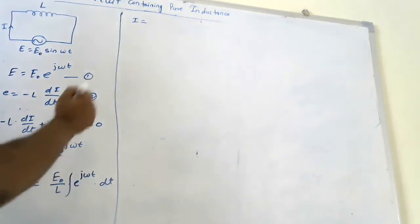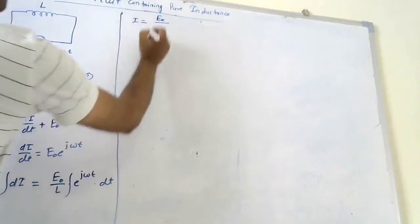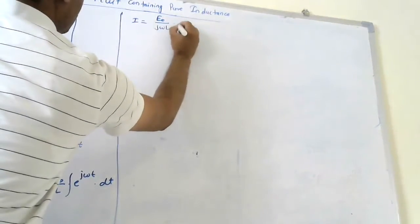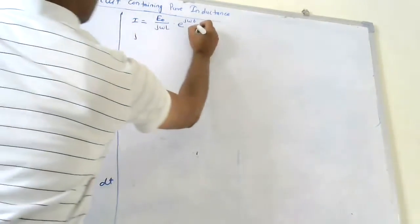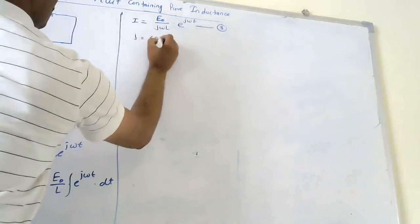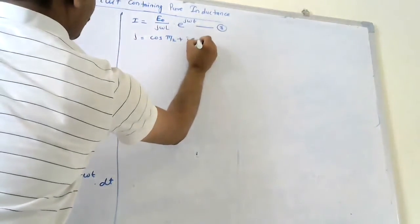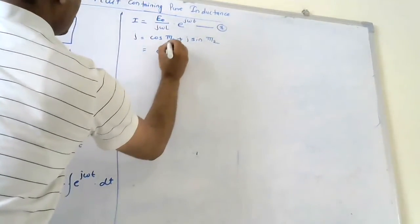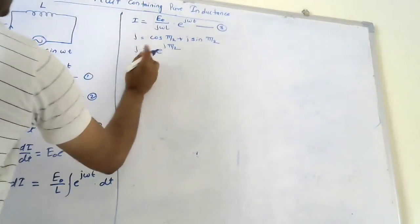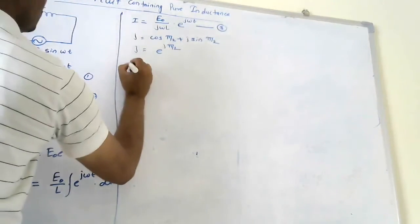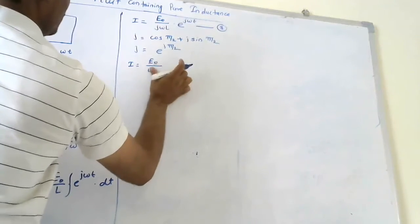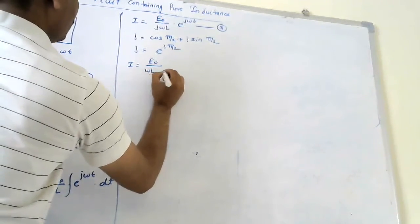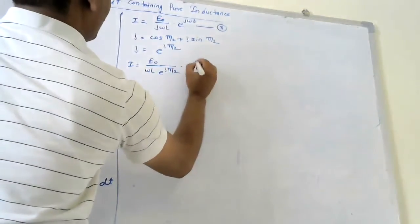Now we know the value of j: j equals cos(π/2) plus j into sin(π/2), which is nothing but e to the power j into π/2. That is the value of j. Putting this value into equation 3, we get I equals to E0 upon jωL, where j is e to the power j(π/2), giving e to the power j(ωt minus π/2).